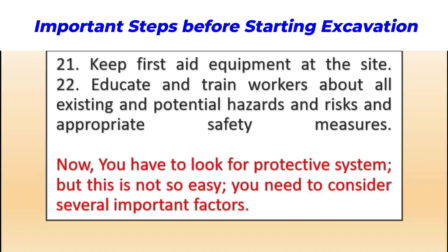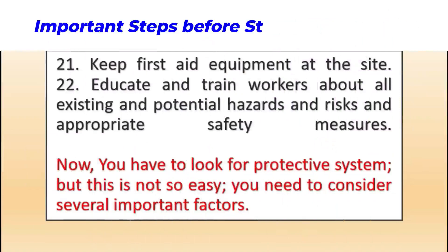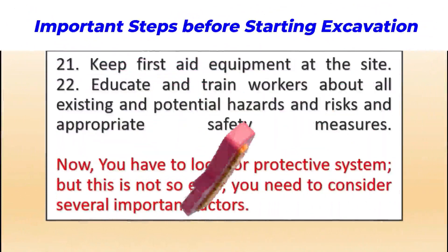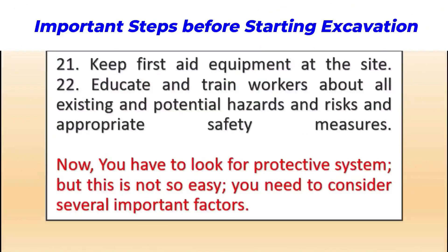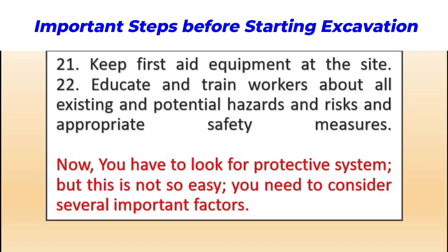To avoid excavation collapse, excavation incidents, and excavation fatalities, you need to concentrate on these 23 points, make a checklist, and as a health and safety practitioner check all points one by one before starting excavation. Most of the time on site, excavation activities proceed without barricading, signboards, traffic control arrangements, flagmen, a protective system, an approved excavation supervisor, or a permit-to-work system.